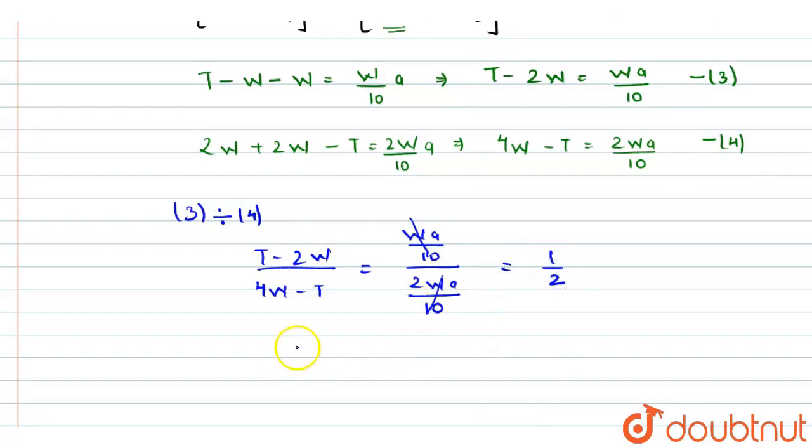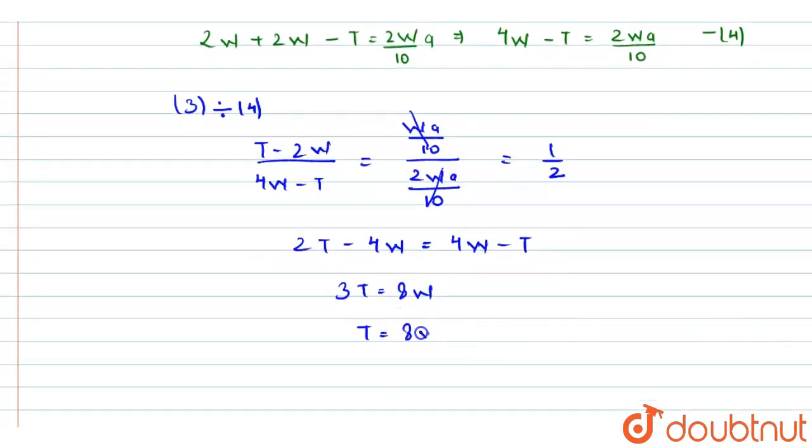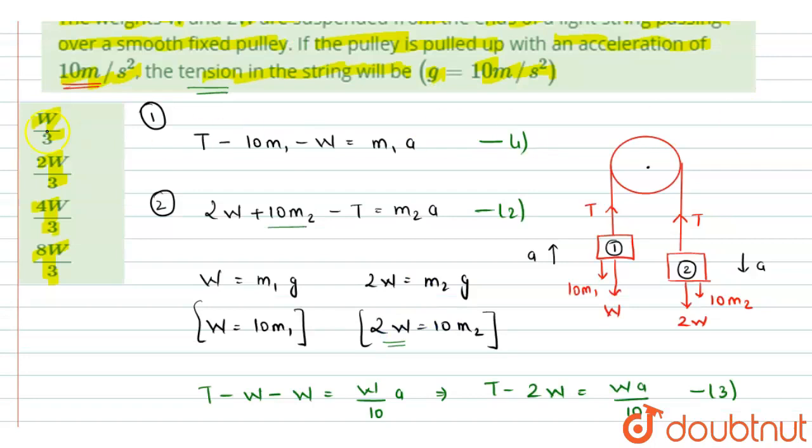So now cross multiplying, we will get 2T minus 4w equals to 4w minus T. From here solving this further, we will get 3T equals to 8w. So from here finally we can write the tension in the string would be equals to 8w by 3, and this is the required part. And from the given equations we have a, b, c, and d. Option d is the correct answer. Thank you.